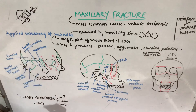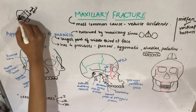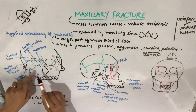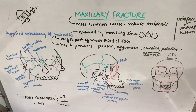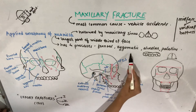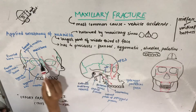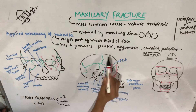A brief about the applied anatomy of the maxilla: the maxilla forms the largest part of the middle third of the face. The face is divided into upper third, middle third, and lower third. The body of each maxilla is hollowed by the maxillary sinuses. The maxilla has four processes: frontal, zygomatic, alveolar, and palatine.